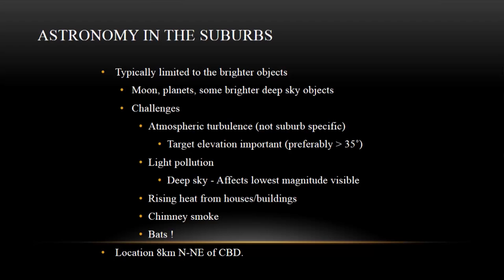Astronomy in the suburbs obviously limits you to the brighter objects. The planets have plenty of light when using any optical aids — whether visually, binoculars, or small or large telescopes. And of course there are some other objects: the brighter deep sky objects such as the Orion Nebula or the Keyhole Nebula. There's a whole range of them that, even though there are a few challenges, you can still take some good images of.